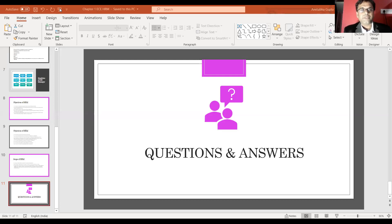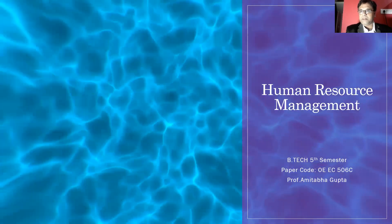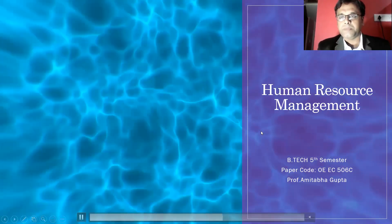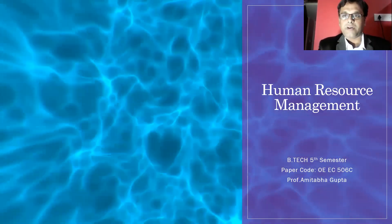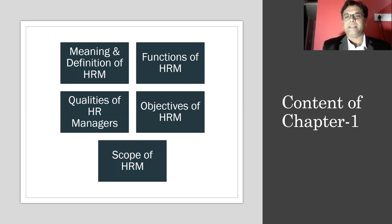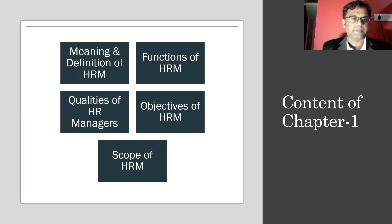Today we are going to study the basic concepts of Human Resource Management — Chapter 1 of this paper. The paper code is OEAC506C. I am Professor Amita Gupta, Head of the Department of MBA, and I'll be taking this paper for you this year. In this chapter, we are going to study: the meaning and definition of HRM, the functions of HRM, qualities of HR managers, objectives of HRM, and the scope of HRM.